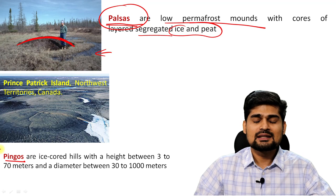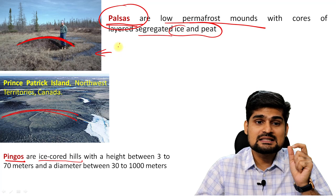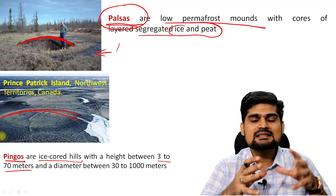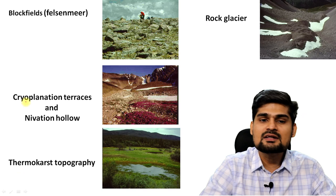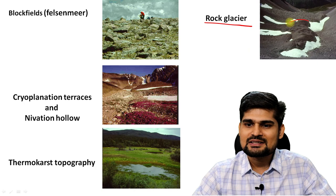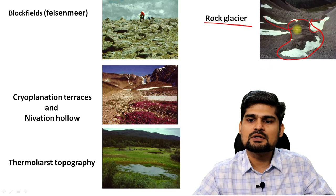Then you have pingos. Pingos are ice-cored hills — hillocks or small hills. Remember these terminologies: pulsas and pingos. The height varies from 3 to 70 meters. These are smaller heaps or mounds of segregated ice and peat accumulated at different places — this example is from Canada. Another feature is the rock glacier. These are rock debris materials which are seasonally frozen and then thaw occurs, creating these semi-frozen, semi-molten glaciers which are a very common sight.